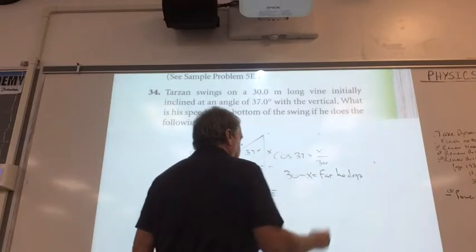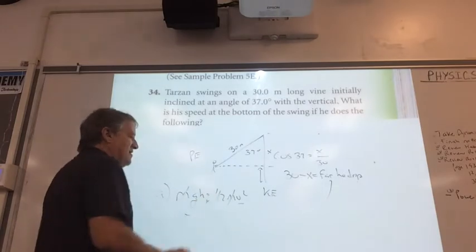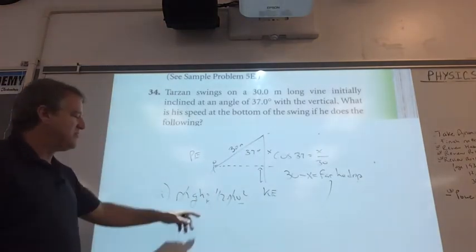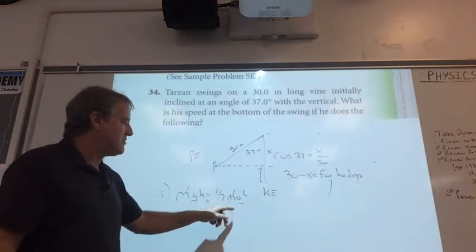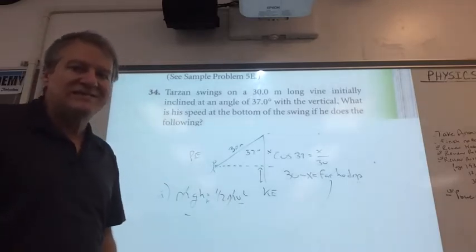All I have to do is multiply that by 9.8, double it, square root it. I got the velocity at the bottom of the swing. Pretty easy to solve.